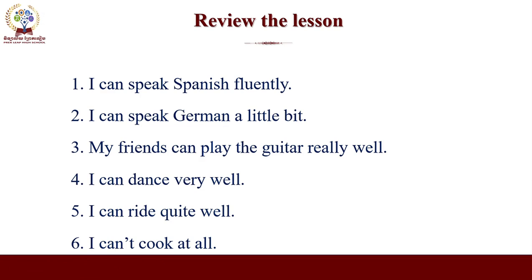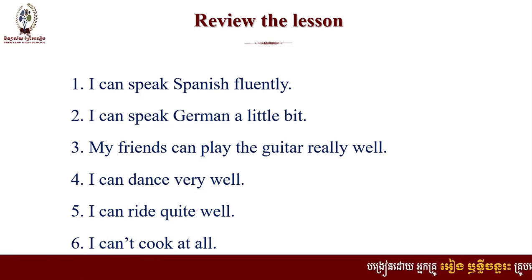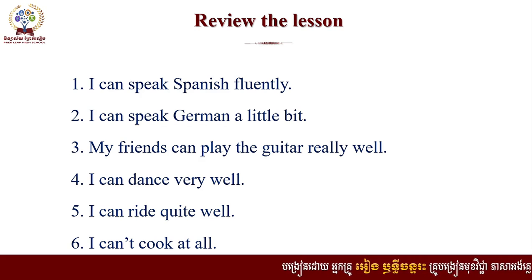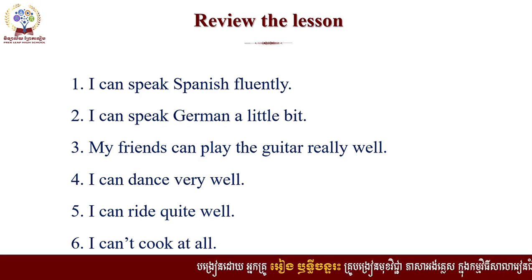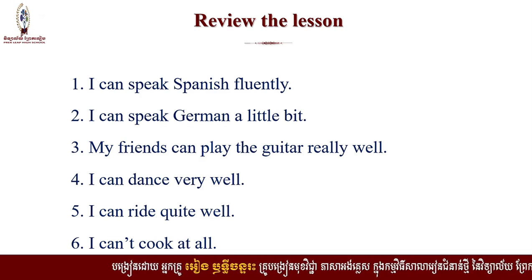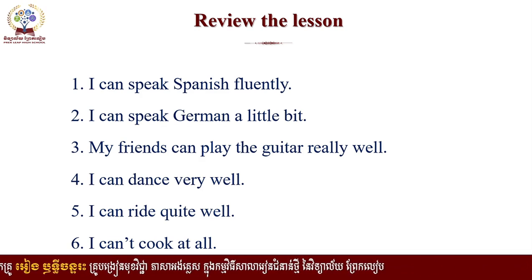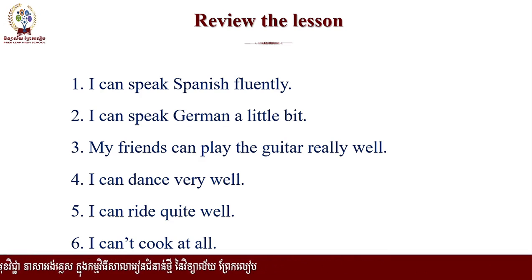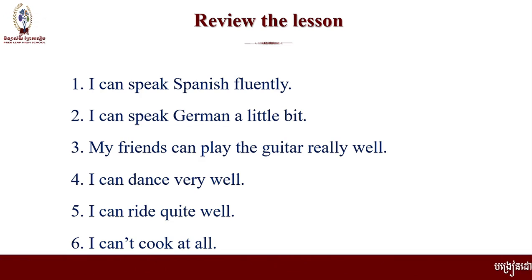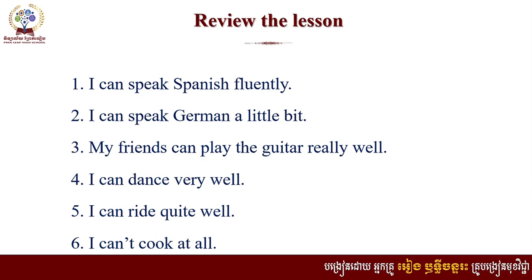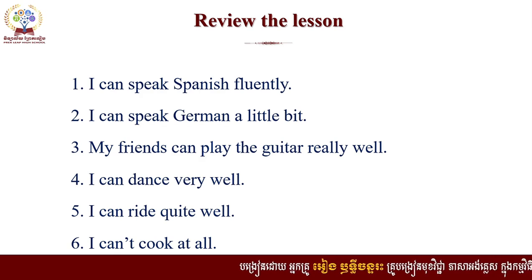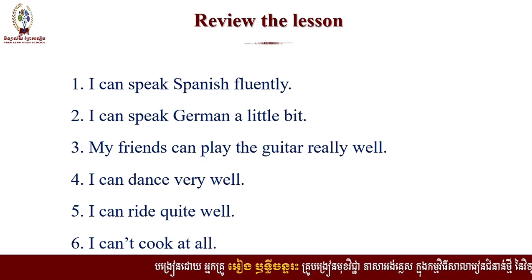Number one: I can speak Spanish fluently. So this is the ability — someone can speak Spanish fluently, which means that they can speak very fast or with grammatically correct form, something like that. And number two: I can speak German a little bit, which means that he, she, or I cannot speak German fluently.